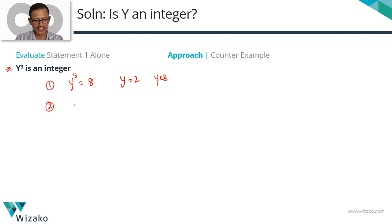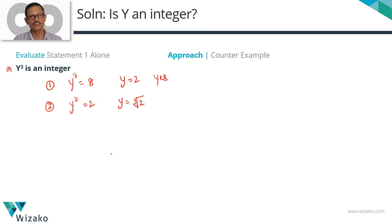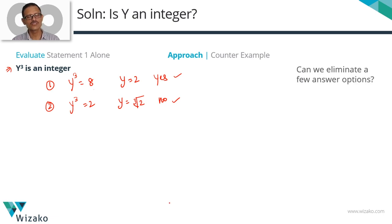Now let's look for a counter-example. Let's say y cube equals 2. Then y equals the cube root of 2, which is certainly not an integer. Is y cube an integer here? Yes — that condition holds. Is y an integer? No. So if y cube is an integer, will y be an integer? It could be, it need not be. We are not able to come up with a conclusive answer, so statement 1 is not sufficient.